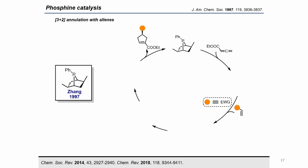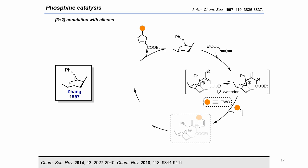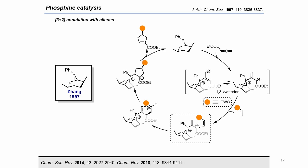One of the most common phosphine-catalyzed reactions is the [3+2] annulation of allenoids with alkenes. Zhang reported in 1997 an enantioselective version of this reaction using a bicyclic chiral phosphine. The reaction starts with the nucleophilic addition of the phosphine to the allene, generating a chiral 1,3-zwitterion. Although two potential isomers of the addition product can be formed, the selectivity is mainly controlled by the substrate, with the position next to the carboxylate being the most nucleophilic one. The subsequent intramolecular addition of the former acrylic enolate leads to formation of the 5-membered cycle. Finally, the phosphine catalyst is recovered through elimination.